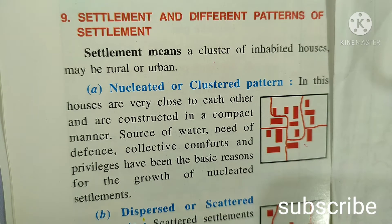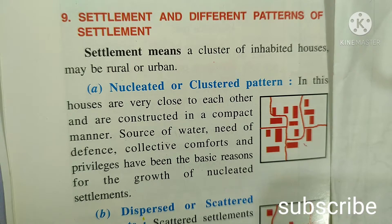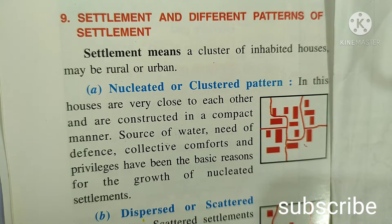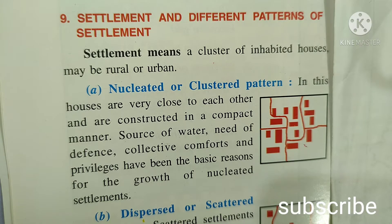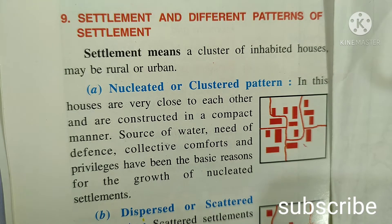The first type of pattern we'll discuss is nucleated or clustered pattern. In this, houses are very close to each other and are constructed in a compact manner. Source of water, need of defense, collective comforts and privileges have been basic reasons for the growth of nucleated settlement.